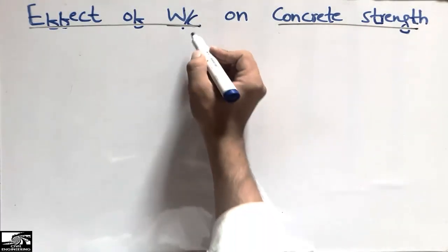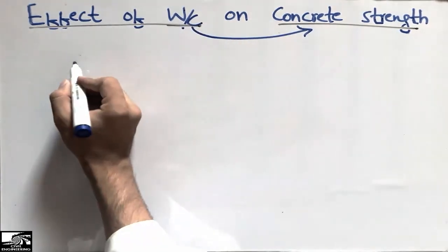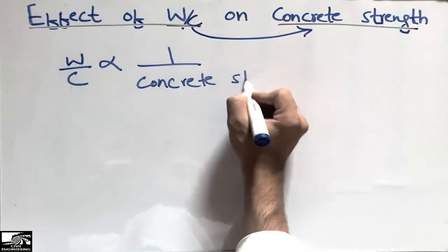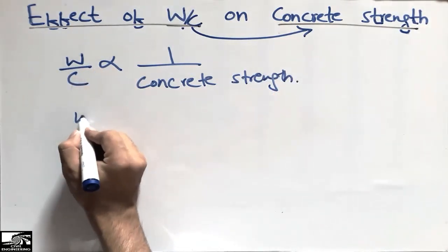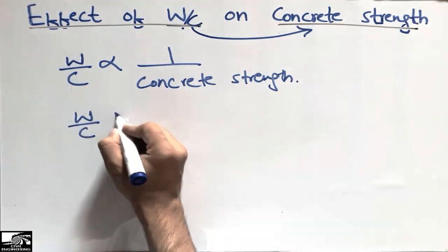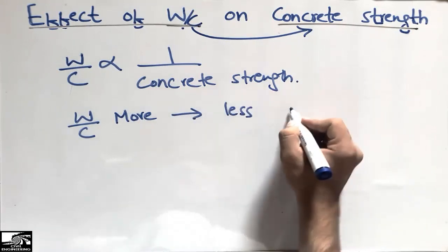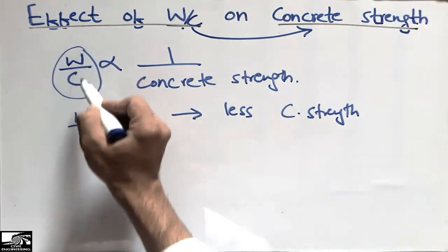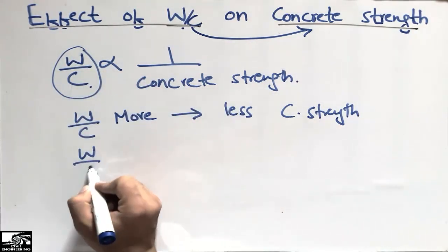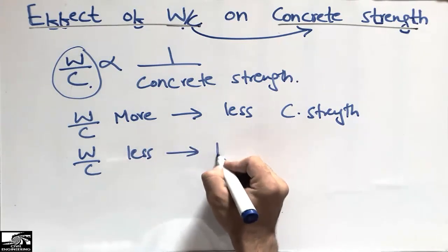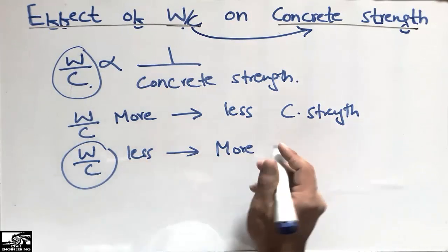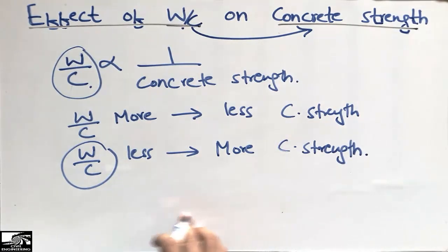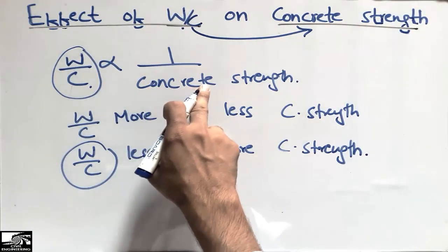In this lecture we are going to discuss the effect of the water-cement ratio on concrete strength. The water-cement ratio has an inverse relation with the concrete strength — if the water-cement ratio used in a concrete mix is more, then we have less concrete strength. If we use less water-cement ratio, we have more concrete strength. This is a very important ratio when defining concrete strength.